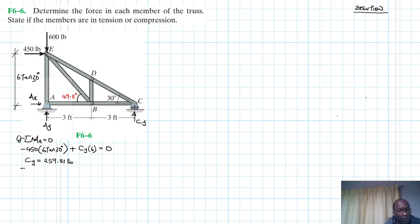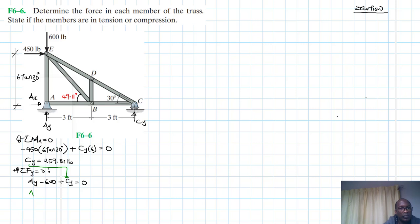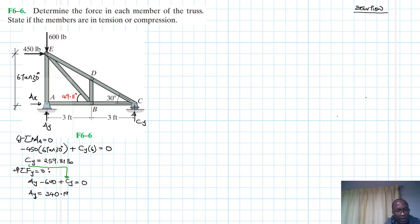Summation of forces in the Y direction: we have Ay minus 600 plus Cy equal to zero. Substituting Cy = 259.81, therefore Ay equals 340.19 pounds.